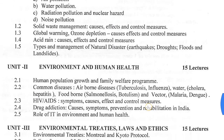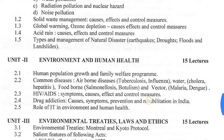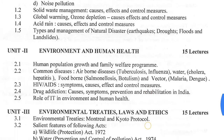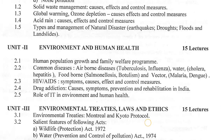The second unit is environmental and human health. Topics include human population growth and family welfare, and common diseases such as airborne diseases like tuberculosis and influenza, waterborne diseases like cholera and hepatitis, foodborne diseases like salmonellosis and botulism, and vector-borne diseases like malaria and dengue, HIV/AIDS — symptoms, causes, effects and controlling measures.